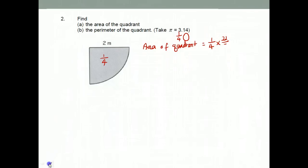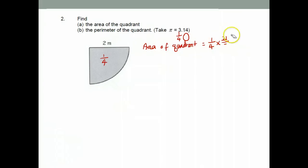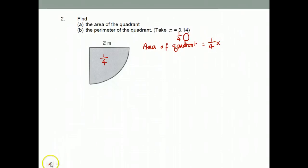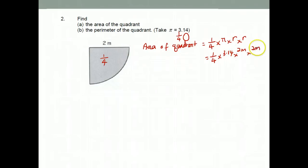Sorry, our pi here should be 3.14. Times pi times radius times radius. So it's one quarter times pi. My radius is 2 meters times 2 meters. And it would be 3.14 meter square.